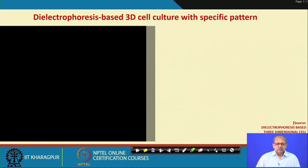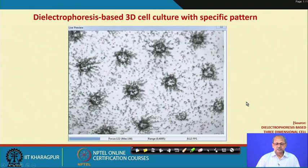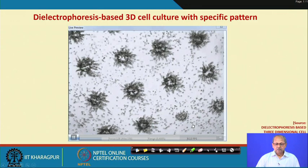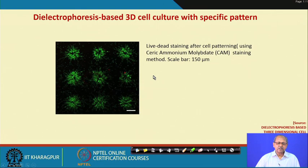The video shows cells clustering around circular electrodes when the DEP system is turned on for 30 to 80 seconds. After stopping the DEP force, PEGDA is introduced and cells are grown for 3 to 4 days in a CO2 incubator. Live/dead assay is performed using cerium ammonium molybdate staining — green indicates viable cells and red indicates dead cells.